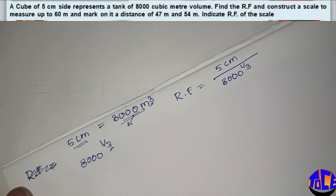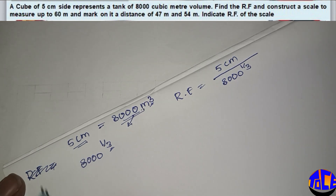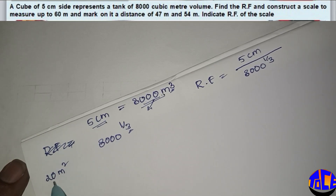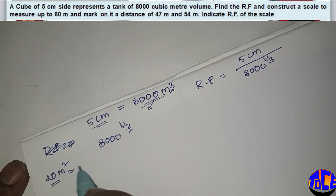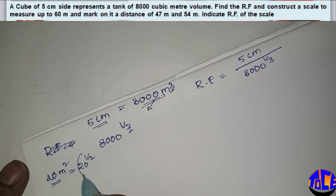Suppose if you have been given an area instead of a cube — for example, 20 meters square — that means it is two-dimensional. So we need to convert this into one dimension. For that, we take 20 to the power of one by two, which gives a one-dimensional value.